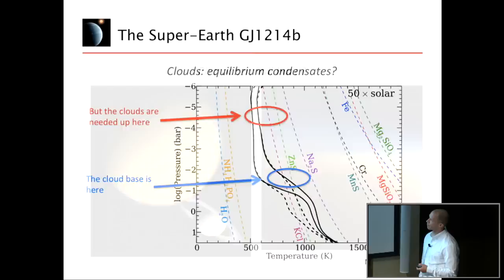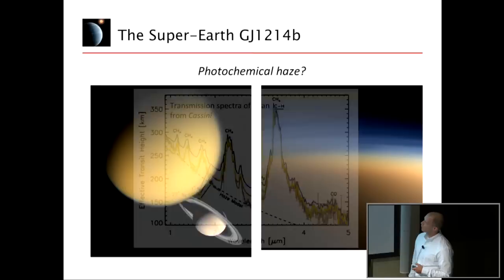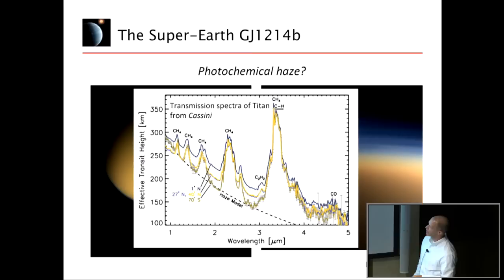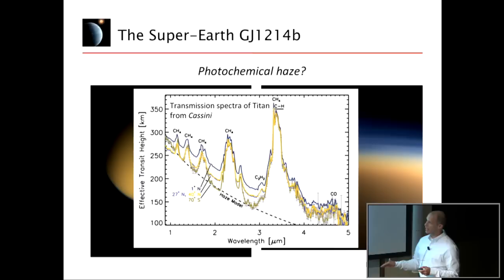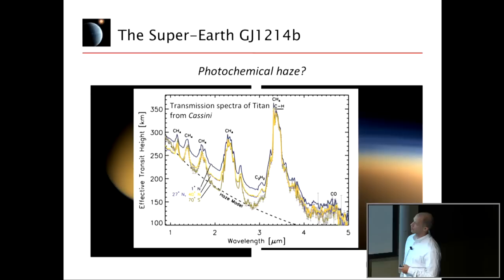From my own perspective, I thought the most likely explanation was some sort of photochemically produced haze in the upper atmosphere, by analogy with Titan. Very recently, Tyler Robinson and collaborators used Cassini to effectively measure a transmission spectrum of Titan as you would see it as an exoplanet — showing relatively large absorption features on top of the photochemical haze scattering continuum. Whether equilibrium condensation or photochemically produced haze explains the data for GJ 1214b remains to be seen.